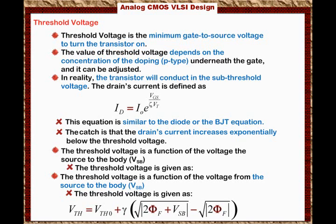In summary: to make the transistor conducting, we must create a channel by applying a positive voltage at the gate that is greater than the threshold voltage, where the threshold voltage is given by the equation above. Once this condition is met, a channel is created and current flows from the drain to the source. To turn on the transistor, apply a gate voltage greater than the threshold voltage; to turn it off, set VGS to zero.